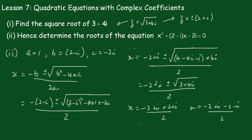In the first case, the minus 2 and plus 2 cancel, and i plus i gives 2i over 2, which is i. So x equals i. In the second case, we get minus 2 minus 2 equals minus 4 over 2, which is minus 2. So our solutions are x equals i and x equals minus 2 — a purely imaginary number and a purely real number.